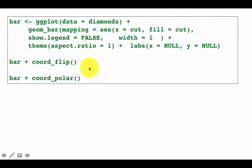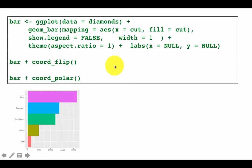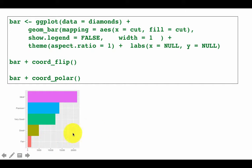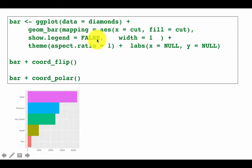If you want to plot it later, you can say bar plus coord_flip. That will produce a regular bar plot with cut on the x-axis and counts on the y-axis, but with coordinates flipped. There is no legend on the axes even though there are different colors because we set show.legend equals FALSE.